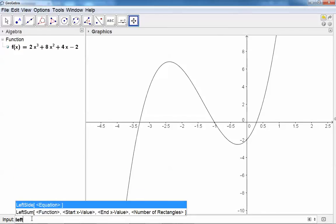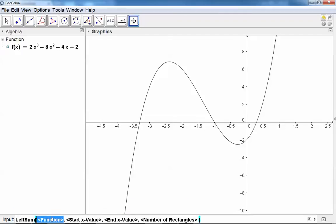We just type in the left sum. You'll see the equation here, the left sum of the function. Which function? It's f of x. Start x value, let's say we start at negative 3. The end x value, we want to terminate at negative 1.